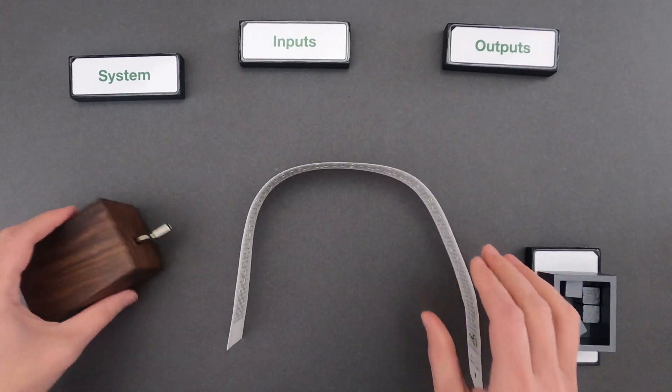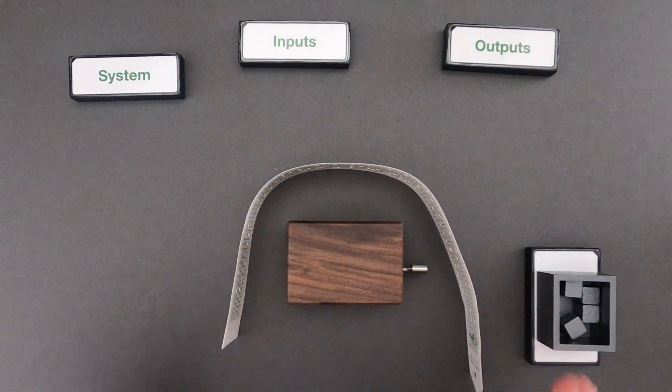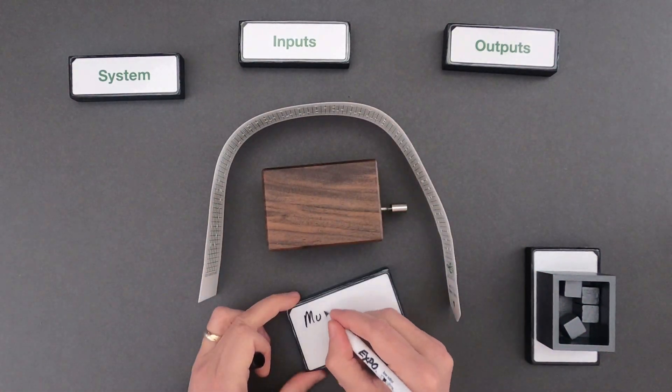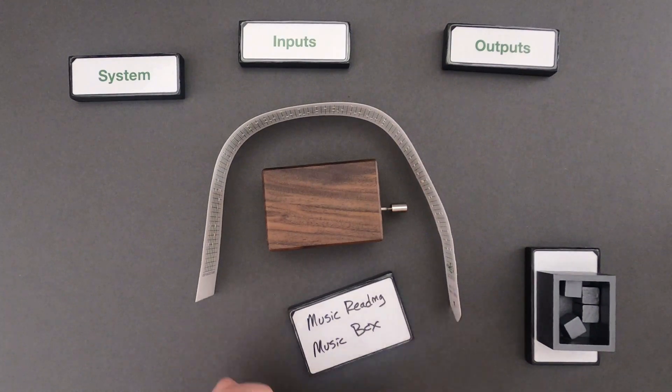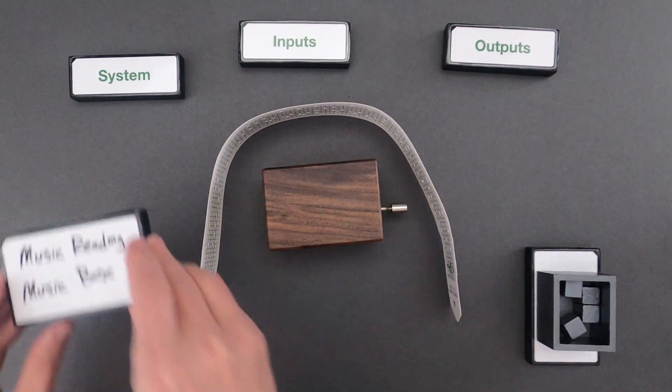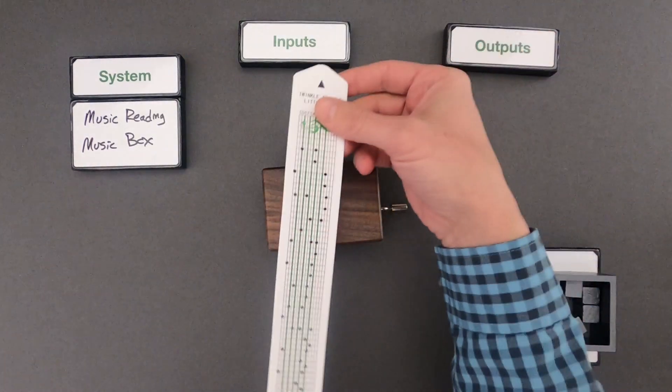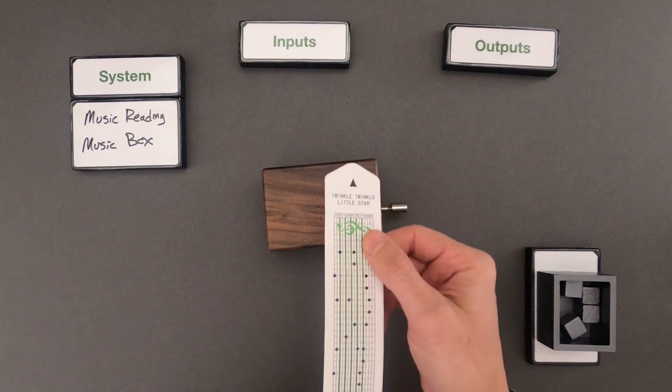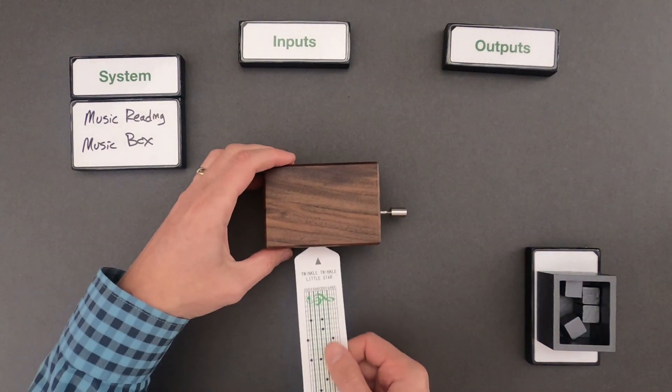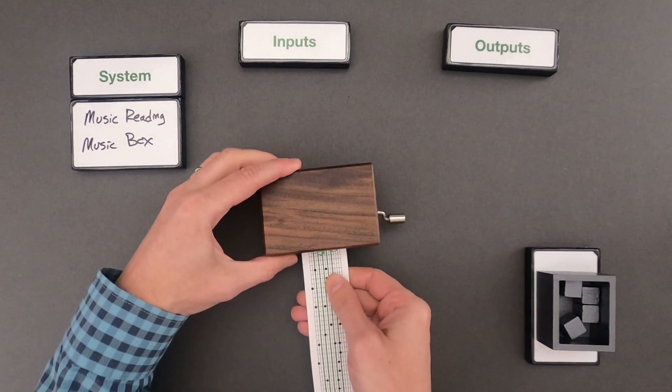And so the first thing we should always define is the system. So in this case the system we're going to investigate is the music reading music box. This has some music. The music is just paper with holes punched out of the song Twinkle Twinkle Little Star. So let's see what this sounds like.